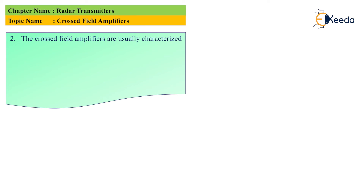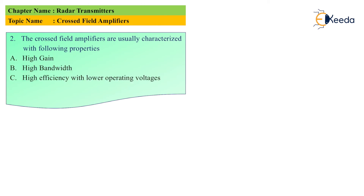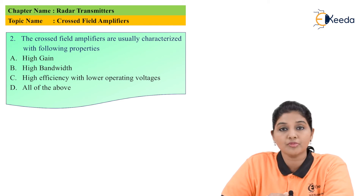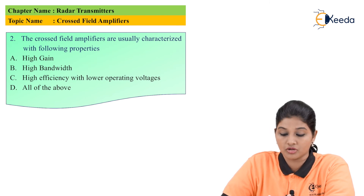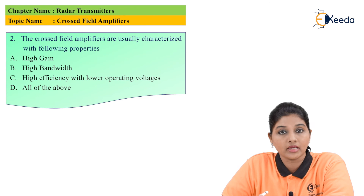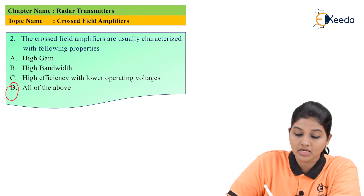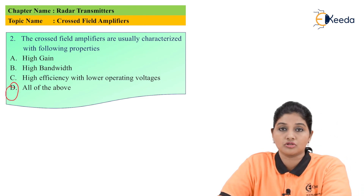The second question is: 'The cross-field amplifier is usually characterized with the following properties.' Options are: A) high gain, B) high bandwidth, C) high efficiency with low operating voltage, and D) all of the above. We know the cross-field amplifier provides a broad range of bandwidth, 40–60% efficiency at low operating conditions, and moderate to high gain. Therefore, option D is the correct answer.